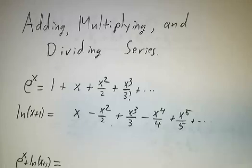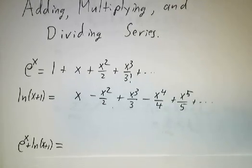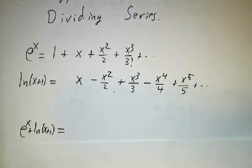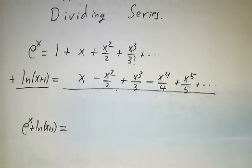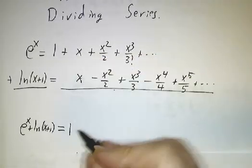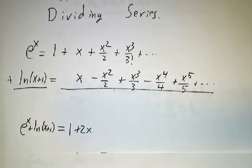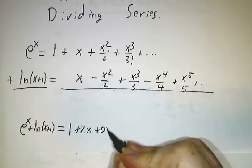So how would we find the power series for e to the x plus ln? Well, we just add the two. 1 plus 0 makes 1, x plus x makes 2x, x squared over 2 minus x squared over 2 gives us 0x squared.